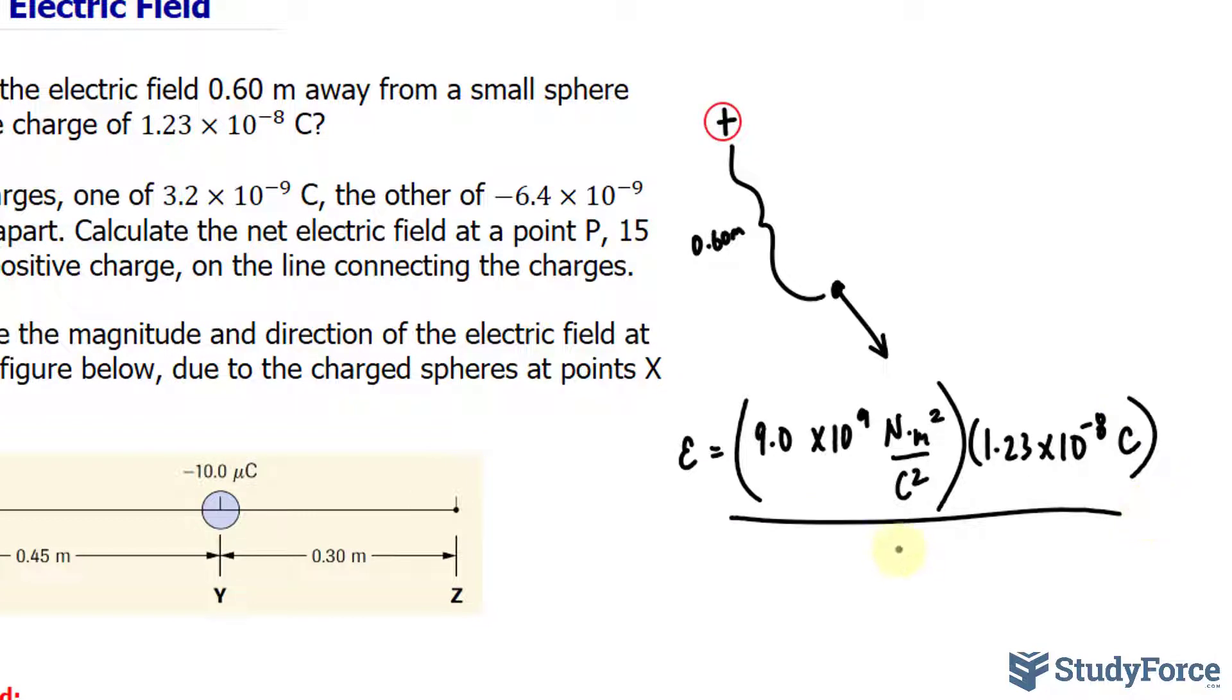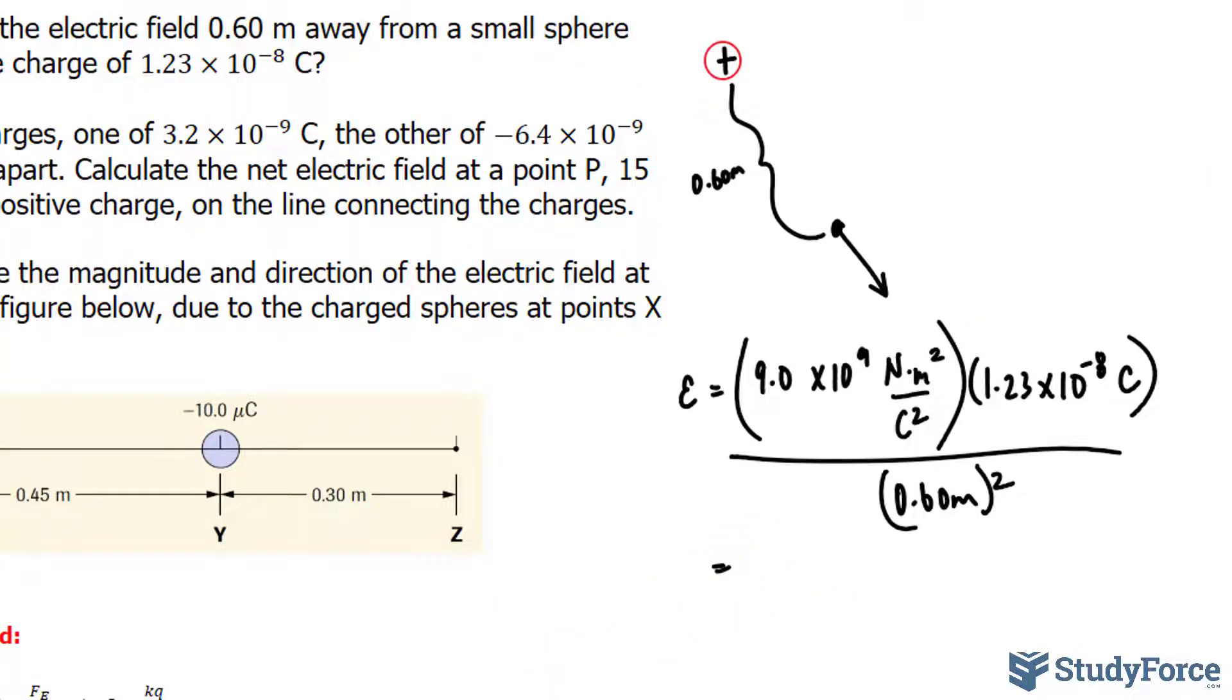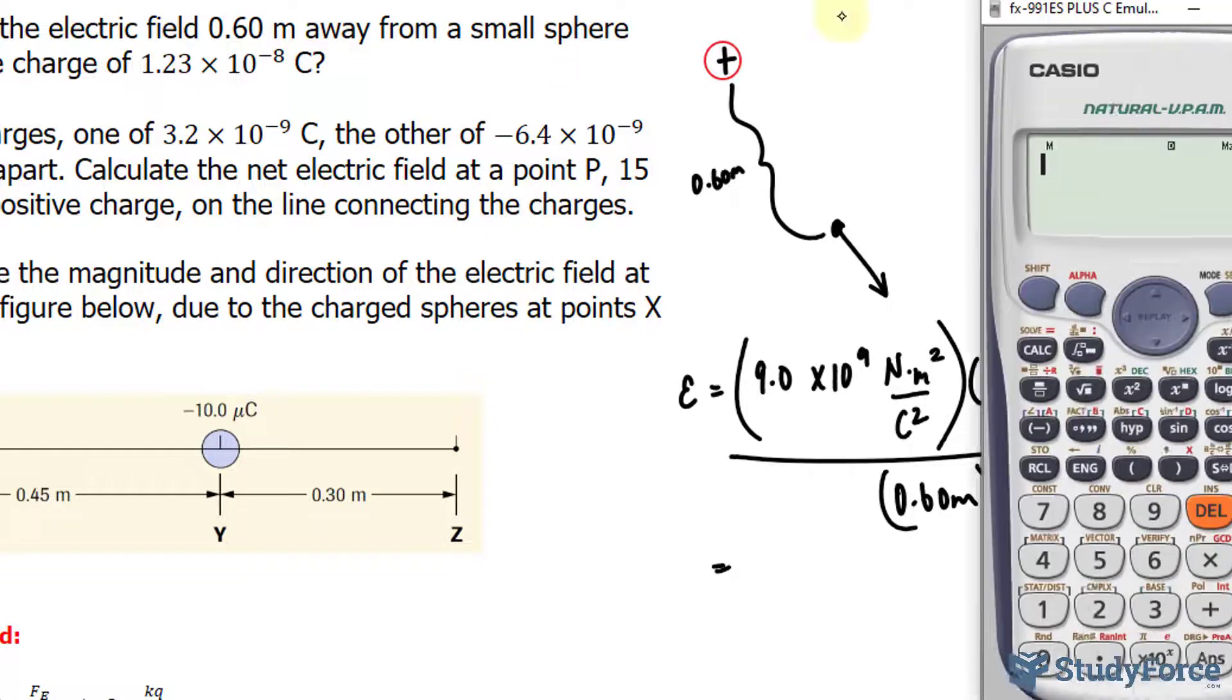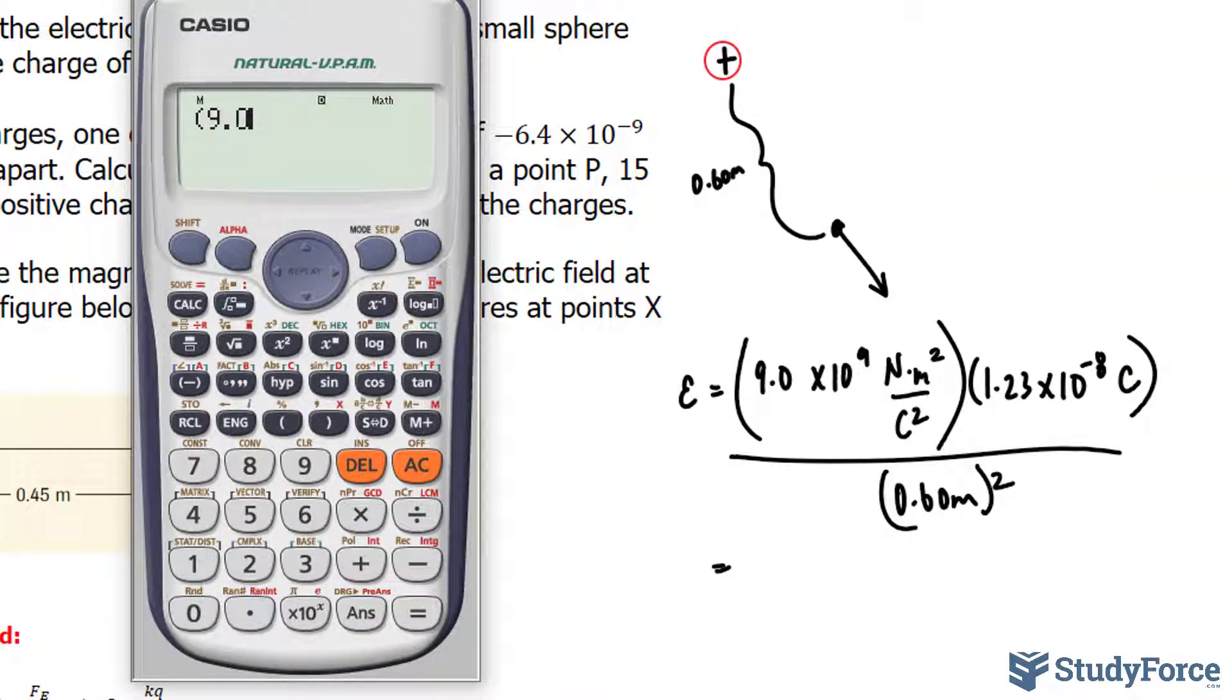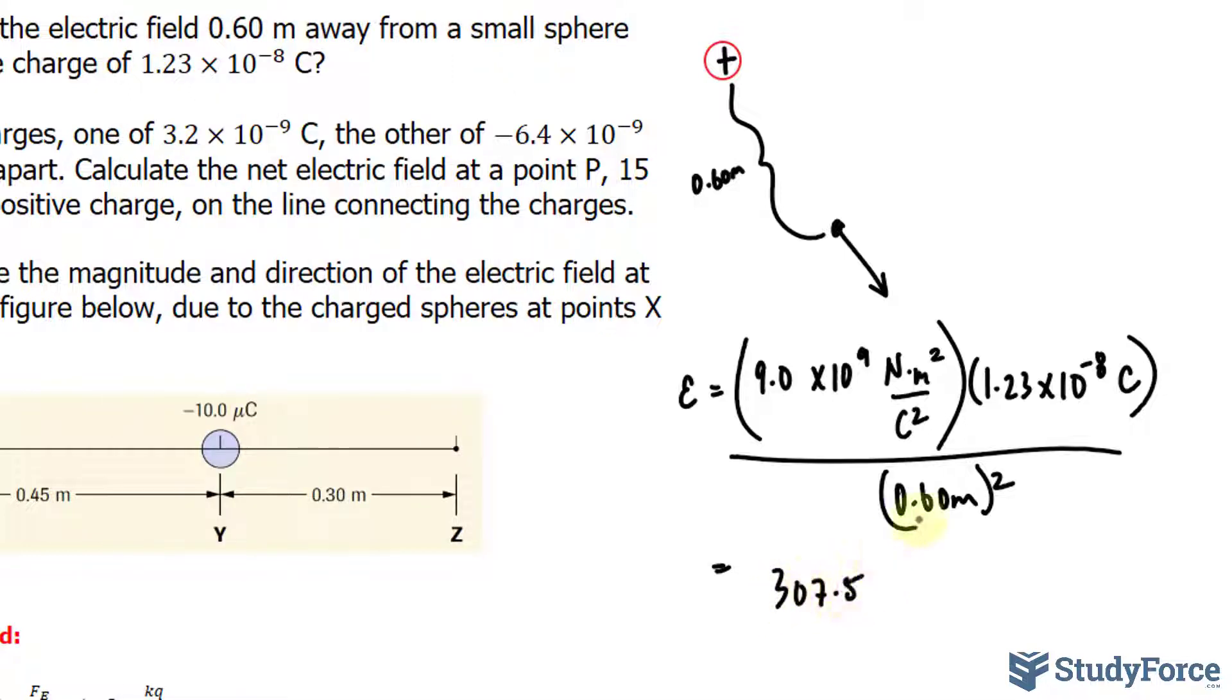That then gets divided by the distance, which is 0.60 meters, and that's being squared. I'll show you how to put this into your calculator. 9.0 times 10 to the power of 9 multiplied to 1.23 times 10 to the power of negative 8 divided by - notice that each factor goes in its own parentheses to prevent any problems with your calculator. Eventually, we get 307.5.